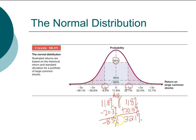And minus one standard deviation means 11.8% minus 20.3%, which gives us minus 8.5%. So in any given year, there is a 68% chance that the return on a large company stock will be somewhere between minus 8.5% and 32.1%. In other words, there is a fairly good chance that you could lose money, because 68% of the time your return could fall within this range.